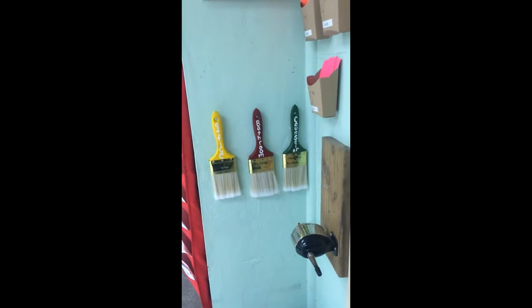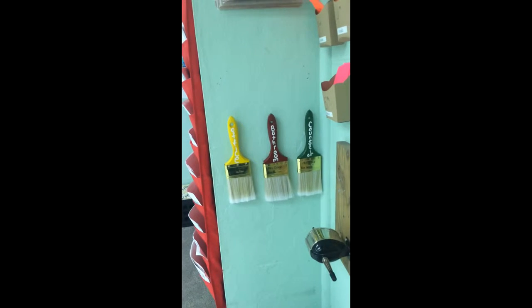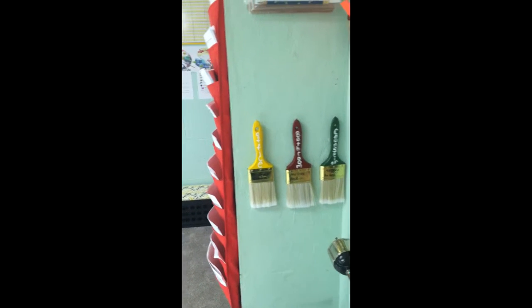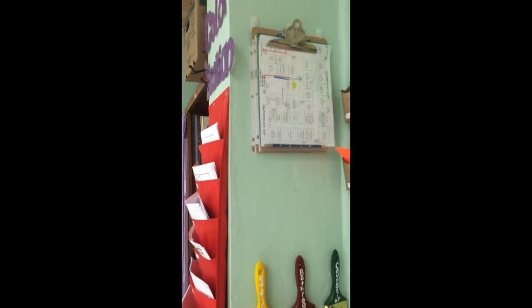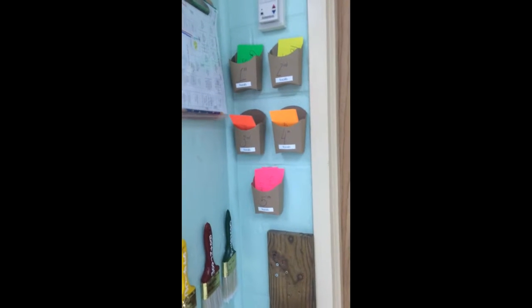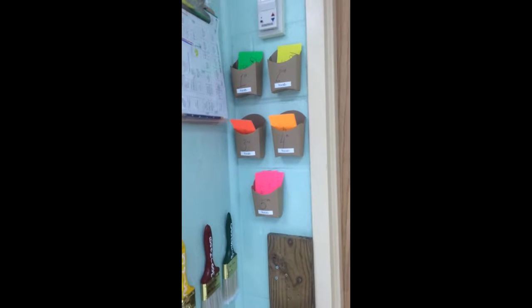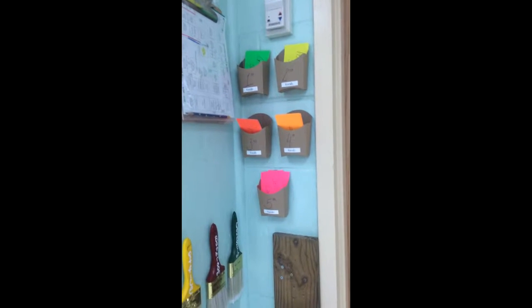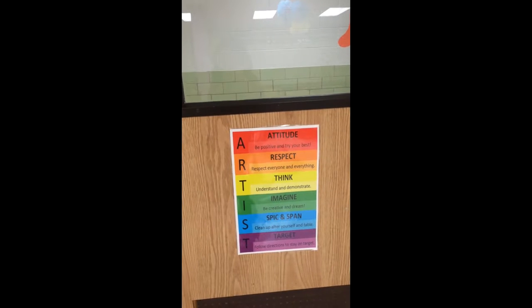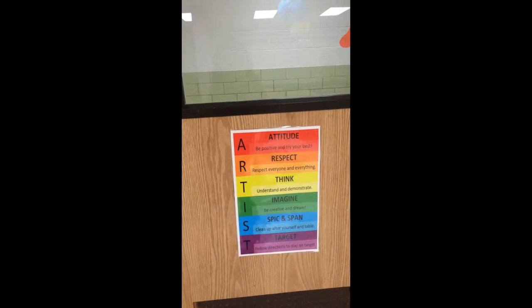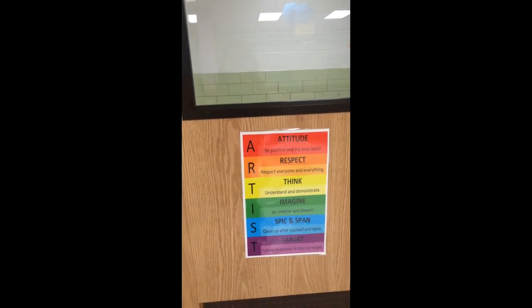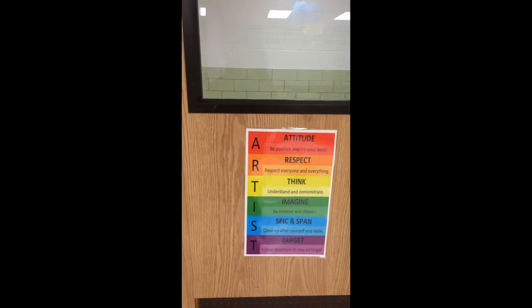Here are my passes for the office, bathroom, and counselor that students use if they leave the room. Above that I have my emergency plans — my subs are aware of where they are just in case anything happens if I'm not here. I have some question cards or vocabulary words that we go over if we line up and have some extra time. And on my door are the artist's rules that they see as they're lining up and coming into the room, so they're reminded of how they're supposed to behave in the art room.